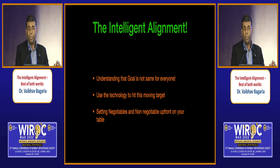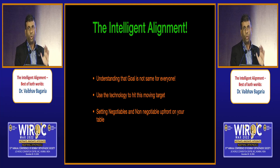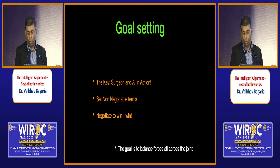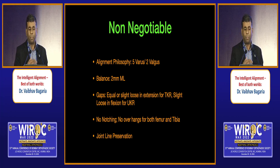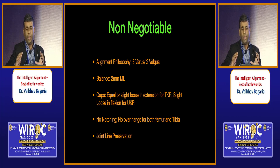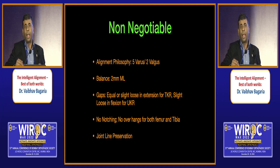Intelligent alignment means understanding that the goal is not the same for everyone, using technology to hit the moving target that is different for each person, and setting certain negotiables and non-negotiables. The key goal is to balance forces across the joint — if you achieve that, the patient will be happy regardless of what the X-ray shows. My non-negotiables: I accept up to five degrees of varus and two degrees of valgus; I want medial-lateral balance within two millimeters; in flexion and extension I expect either equal gaps or, for larger male patients specifically, slightly loose in extension for total knees.